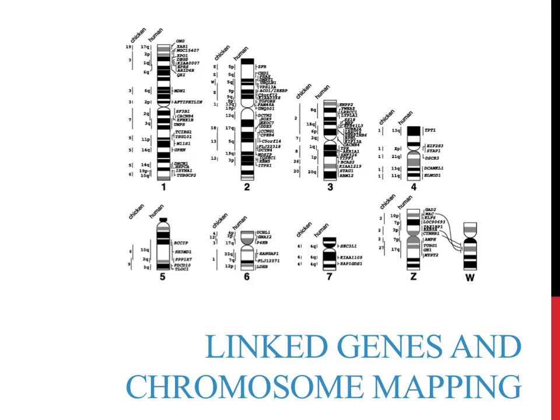There are many traits that are located on each chromosome, as shown in the picture on the top of this slide. Genes that are located on the same chromosome are referred to as linked genes. The rate of crossing over from linked genes can be used to determine the distance that these genes are located apart from one another.